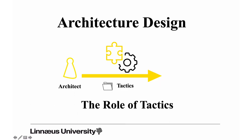Looking at architecture design — I've seen this picture a couple of times. We have the architect and the architect's responsibility during architecture design: to design an architecture that enables the architecture-significant requirements connected to a stakeholder concern.